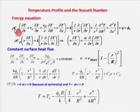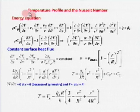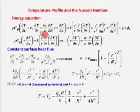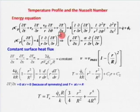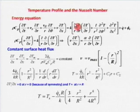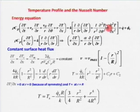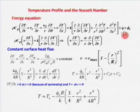We will first take the energy equation: ρC_P(∂T/∂t) + V_R(∂T/∂R) + (V_theta/R)(∂T/∂theta) + V(∂T/∂x) = K[(1/R)(∂/∂R)(∂T/∂R) + (1/R²)(∂²T/∂theta²) + ∂²T/∂x²] + Q_dot + Φ_V. This is the energy equation in cylindrical coordinates, derived the same way as for Cartesian coordinates.